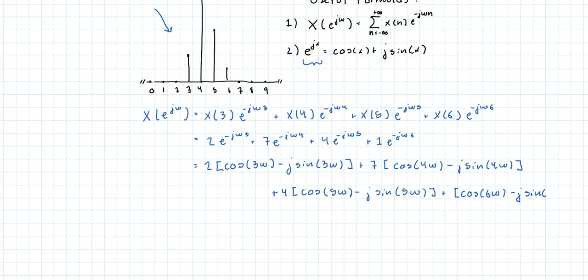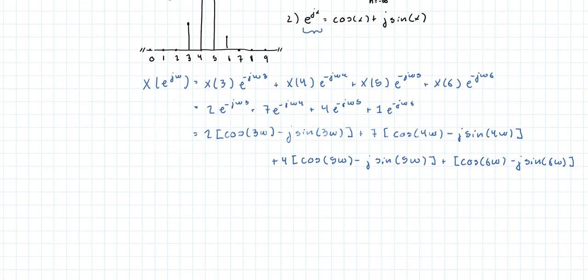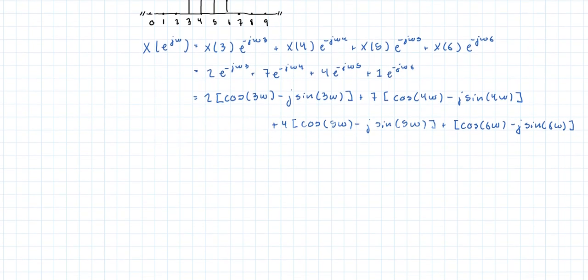Oops, that's a 6. Okay, we're going to group like terms, so we're going to end up with a complex expression. We have 2 times cosine of 3 omega plus 7 cosine of 4 omega plus 4 cosine of 5 omega plus 1 times cosine of 6 omega.